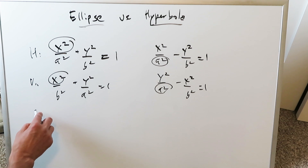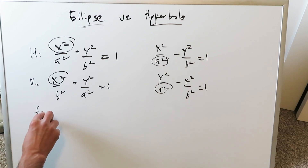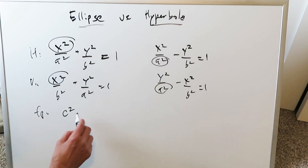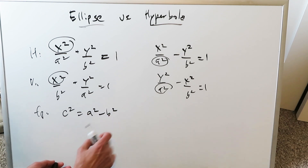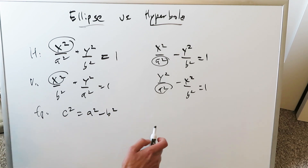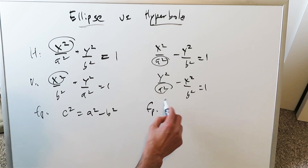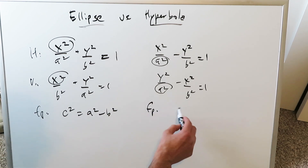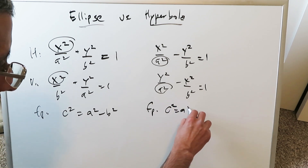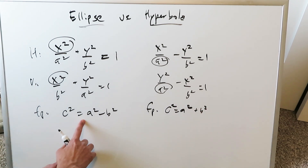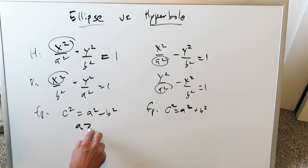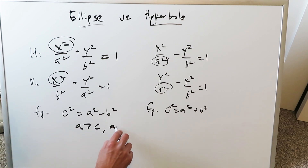If you are looking at the focal points, that is the key difference. For the ellipse, c squared is always equal to a squared minus b squared. For the hyperbola, c squared is always equal to a squared plus b squared. This tells you that for the ellipse, a is definitely larger than c and a is definitely larger than b.